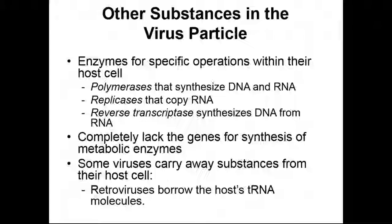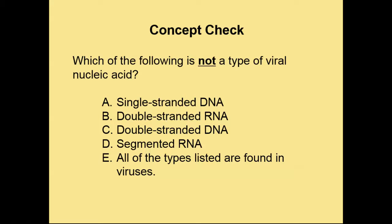Concept check. Which of the following is not a type of viral nucleic acid? Single-stranded DNA, double-stranded RNA, double-stranded DNA, or segmented RNA? Or E, all of the types listed are found in viruses. If you don't know the answer, you can pause the video and rewind, or you can look up the answer by flipping back in your PowerPoints or checking your textbook. The correct answer is E, all of the above.